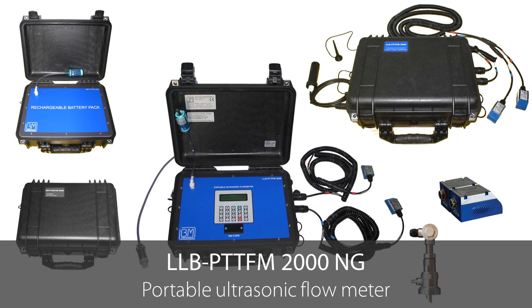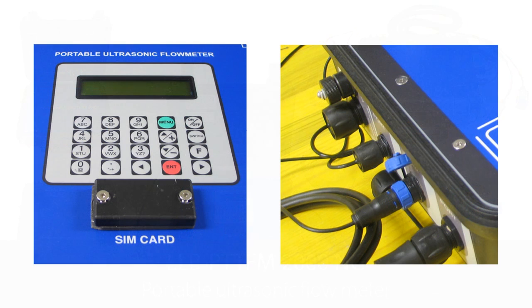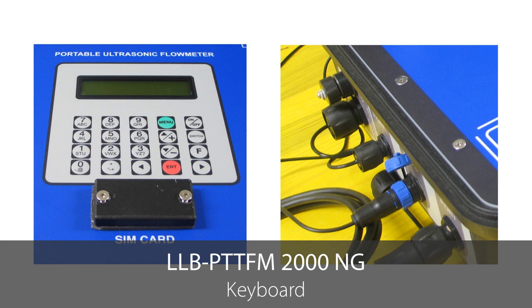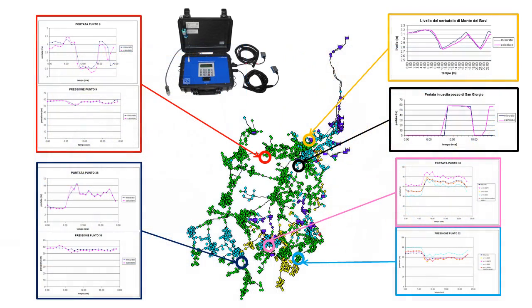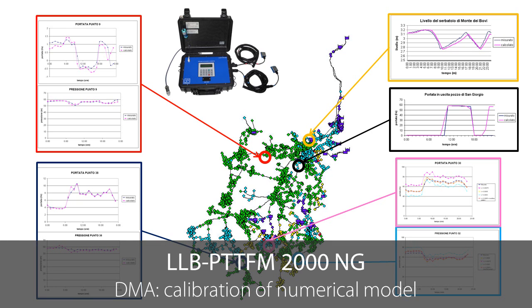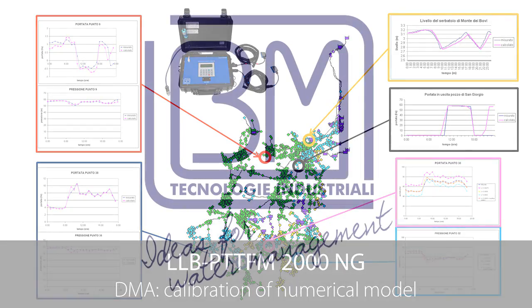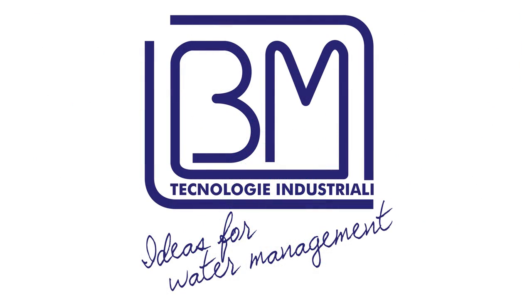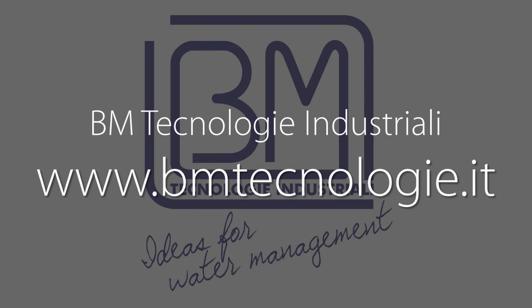The advanced configuration menu can easily guide even less experienced operators through device configuration in a few steps, using the keyboard or the Hydroflux software. The main application of this device is in virtual DMA monitoring to detect water losses. It can also be used in short- or long-period measuring campaigns for the calibration of numerical models applied to water supply networks and for the definition of water balances. For any additional information, please visit our website at www.bmtechnologie.it. Thank you for your time.